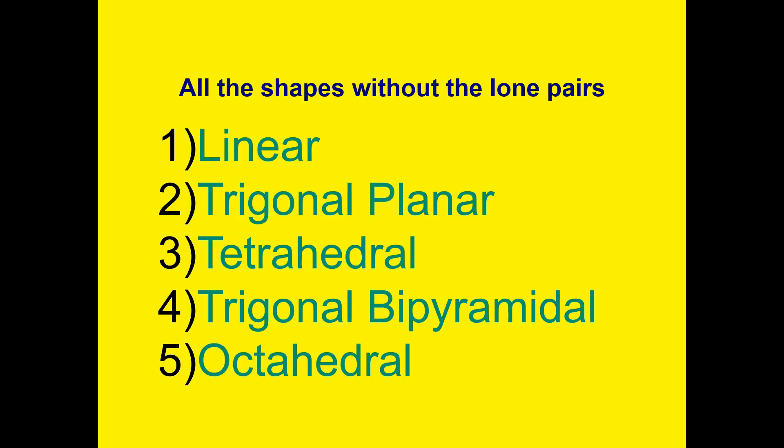Looking at our shapes without the lone pairs starts us at 5 types: linear, trigonal planar, tetrahedral, trigonal bipyramidal, and octahedral.